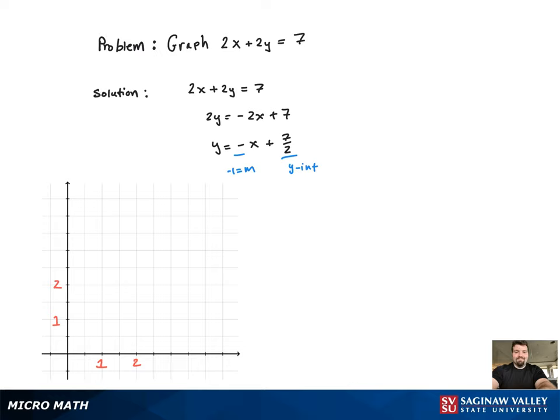We'll start by putting the y-intercept on the graph. Now we'll use the slope, go right 1, down 1. There's the second point. Now two points, we can connect the dots and get our line.